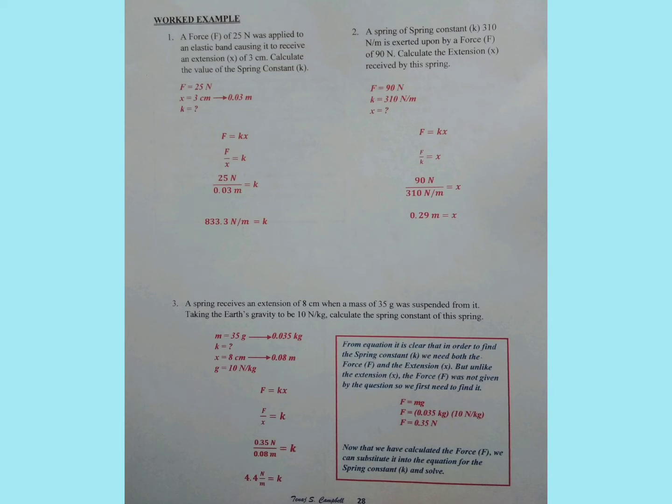X is equal to 8 centimeters, converted it becomes 0.08 meters. And of course, you have to list gravity, which is 10 Newtons per kilogram. The next thing to do is to write the formula for the Hooke's Law equation: F is equal to KX. We are finding K, so it must become the subject. So K is equal to F over X. What this is saying is that we need force and extension in order to solve for K.